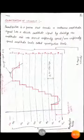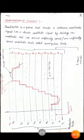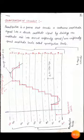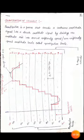Before discussing Pulse Code Modulation, we will first discuss Quantization. What is Quantization? In the previous lecture, we discussed Sampling. Basically, sampling converts a continuous time signal into a discrete signal. What is the meaning of a discrete signal? It means the time axis is divided into a number of time intervals.